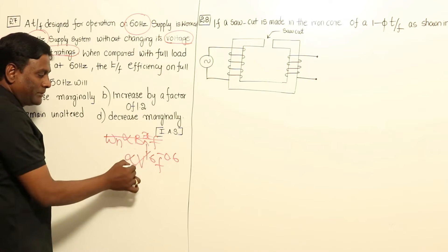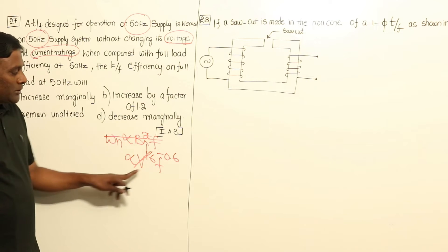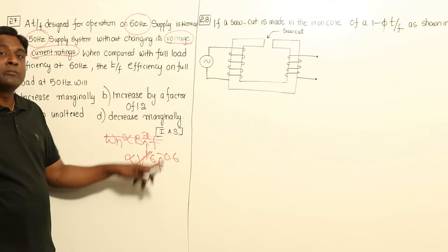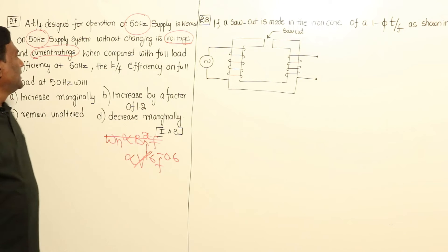Since voltages are maintained constant, hysteresis loss is directly proportional to F to the power of minus 0.6.